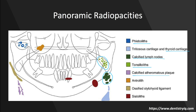A calcified atheromatous plaque will appear below the angle at the level of the hyoid bone, usually in line with C3 and C4 of the cervical vertebrae. An antrolith refers to a calcified mass in the maxillary sinus, so it will be located up in that region. The styloid-hyoid ligament can be ossified, connecting the styloid process to the hyoid bone, and if ossified it'll appear as a thin radiopacity.